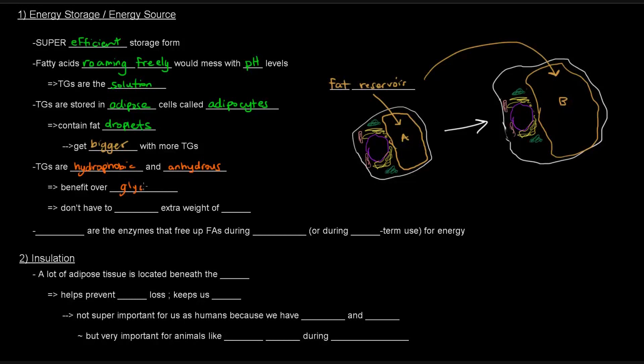This contributes to the efficiency of the storage form. Because there's this benefit over glycogen, which is also a storage form of energy. But because triglycerides are hydrophobic and anhydrous, they don't need to be dissolved in water. They don't have to be hydrated in the way that glycogen does. Because glycogen being polar, it needs to be hydrated. It is hydrous. So, triglycerides don't have to carry the extra weight of water.